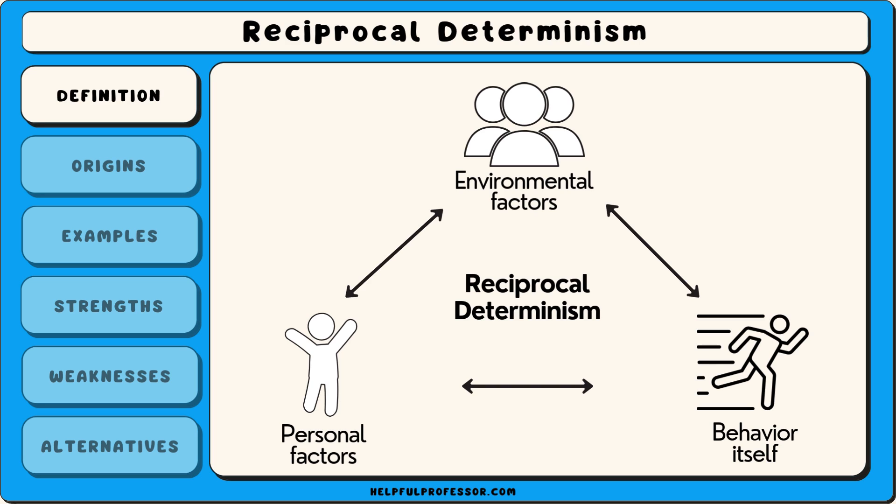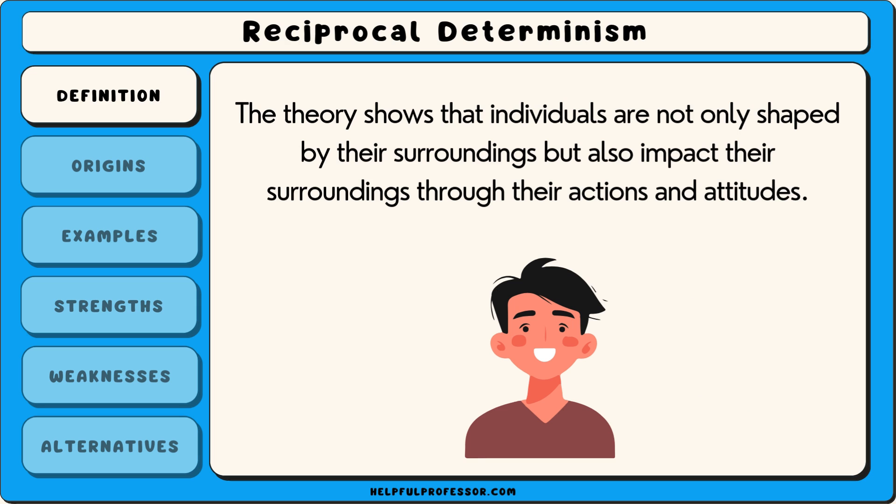Reciprocal determinism is a concept that explains how a person's behaviour, personal factors and their environment all influence one another in a continuous cycle. It shows that individuals are not only shaped by their surroundings, but also impact their surroundings through their actions and attitudes.